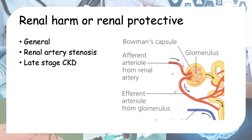Another case where ACE inhibitors and ARBs are harmful is in late chronic kidney disease. In late CKD, glomerulosclerosis has already reduced the amount of blood being filtered, decreasing GFR. Using ACE inhibitors or ARBs to dilate the efferent arteriole further diverts blood away from filtration, compounding the problem and worsening the GFR decline. That covers how these drugs can be renal harmful in these two cases.